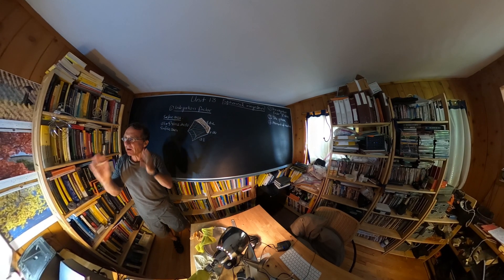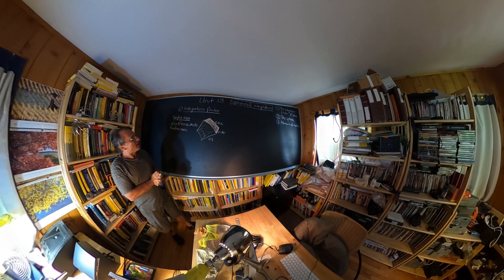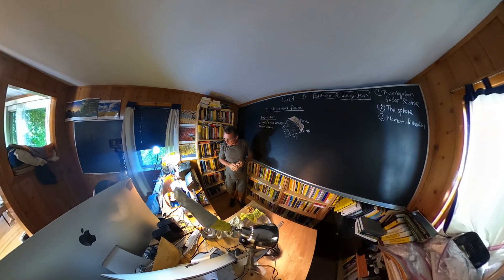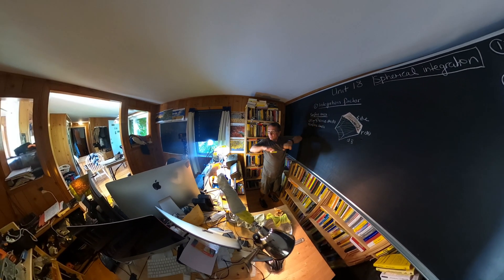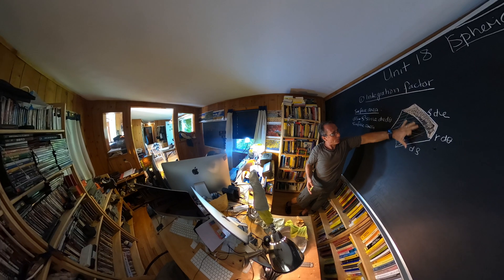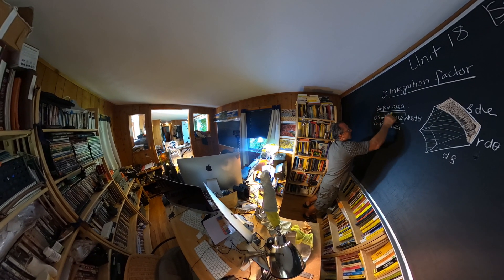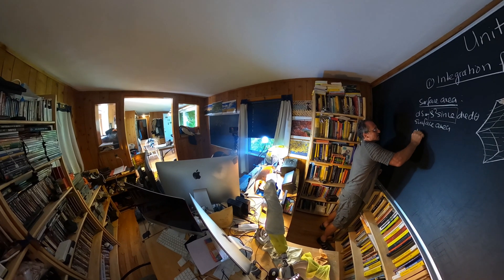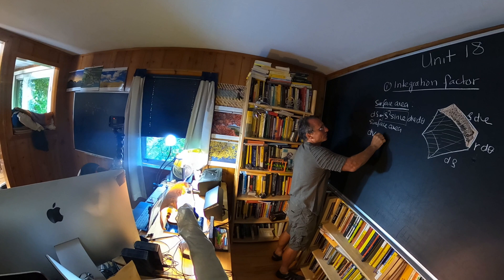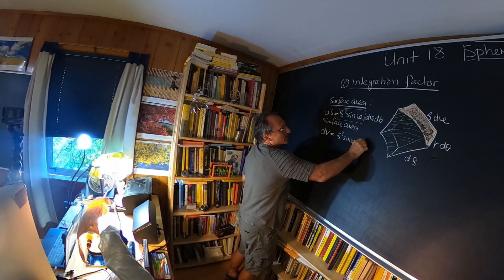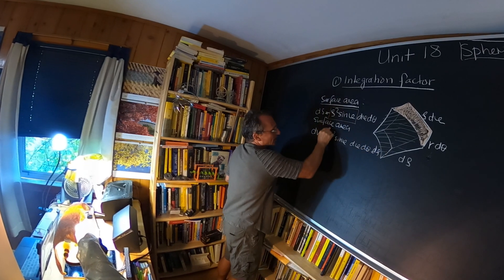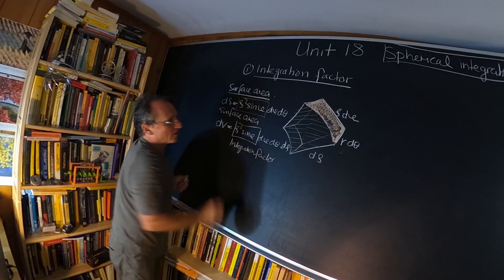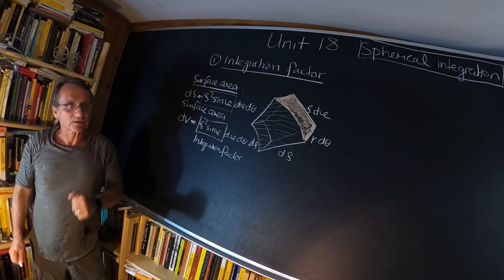Welcome to Unit 18. We are integrating in spherical coordinates. We have already made headway towards this integration factor, which has to be included. We have already seen that when we use spherical coordinates and look at the surface area of a sphere, we get the factor ρ² sinφ for dS. This is the surface area part, and the volume element is obtained by multiplying by the height dρ, giving ρ² sinφ dφ dθ dρ as our integration factor.